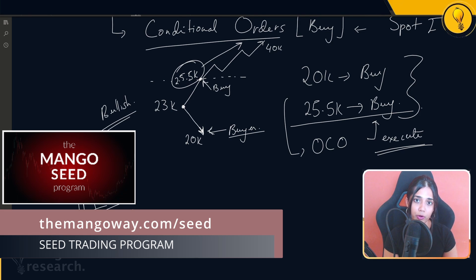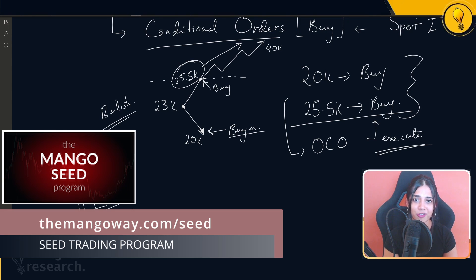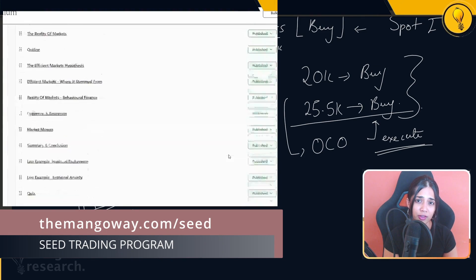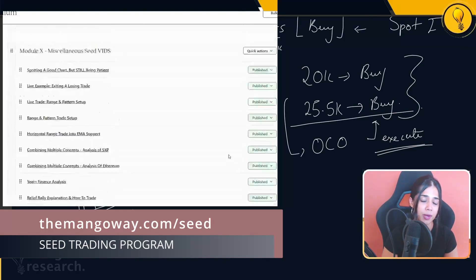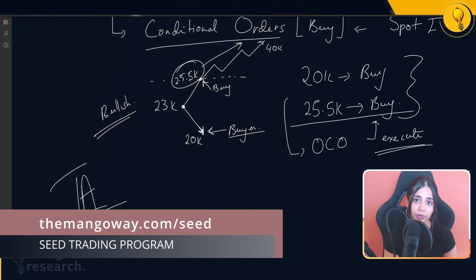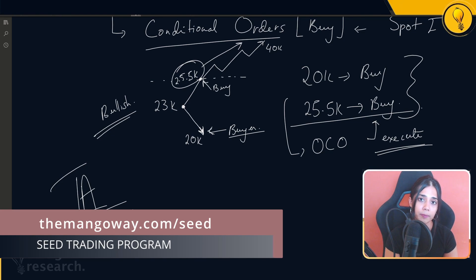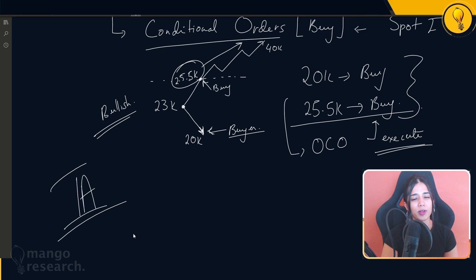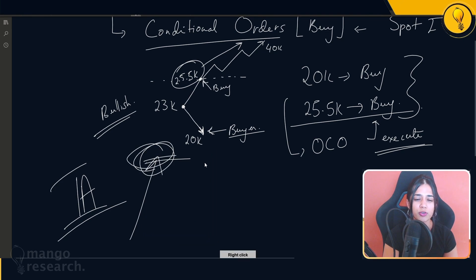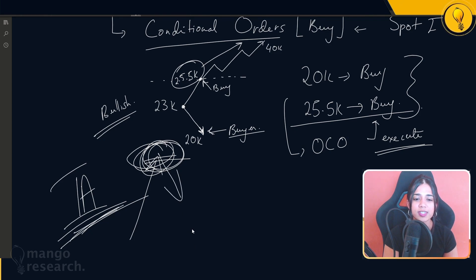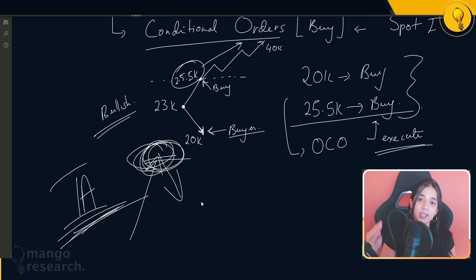The resource I would recommend for really learning your TA is the Mango Sea trading program. I've learned everything I know from it, and I'd recommend speaking to other students and looking at testimonials to make your own call. TA isn't just about getting profits — it's about keeping your profits when you get up to crazy levels. It's what helps you be objective during market phases, telling you when to sell your bags and take profits.